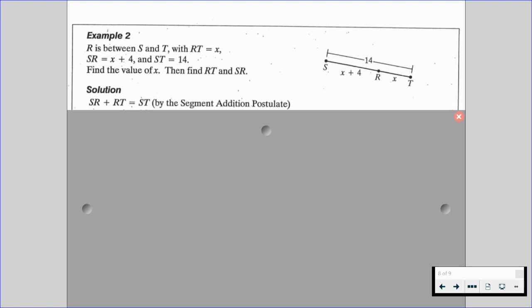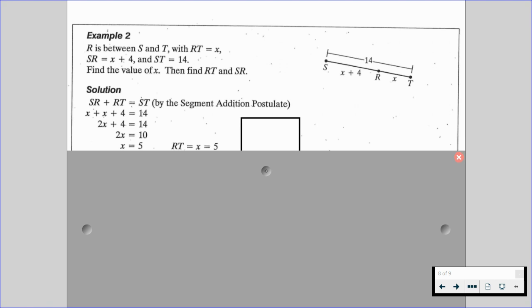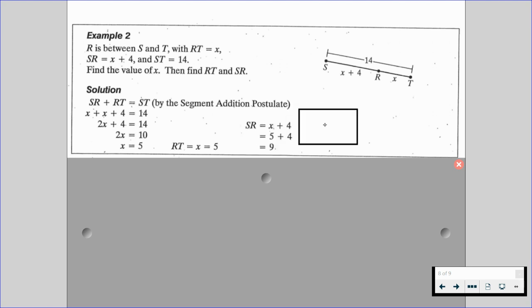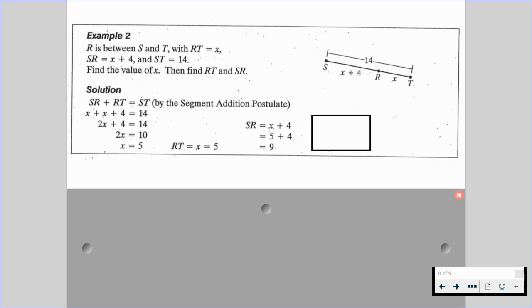So we're always going to start with SR plus RT is equal to ST because that's the segment addition postulate. Now from here we're going to input our algebraic representations. We know that segment SR is x plus 4. We know that segment RT has a length of x and we know that the total of segment ST is 14. So we can substitute in the algebraic values and we can solve and we find that x is going to be equal to 5, which means that segment RT is 5. But now we have to go back and find SR so we have to plug in 5 for x and we do 5 plus 4 which gives us 9.